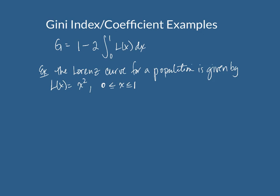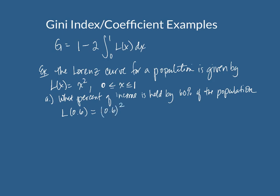First question is, what percent of income is held by 60% of the population? And we're going to assume that they mean the lower 60% of the population. So basically we want to calculate L of 0.6. So 0.6 squared is 0.36, and so this means 36% of the income is held by 60% of the population.